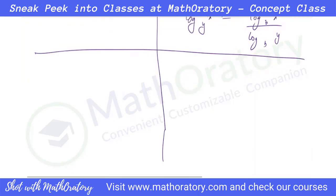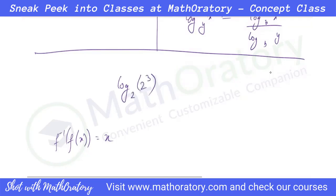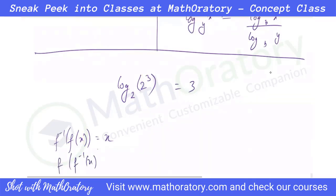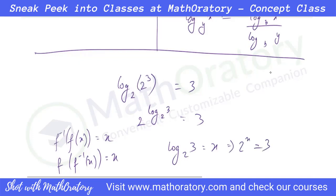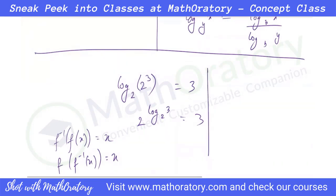The last property uses the inverse idea. Recall that f inverse of f of x always equals x. So two raised to log base two of three will always equal three — we input three into the indices function and take its inverse, giving back three. Similarly, log base two of two to the power x also equals x. So b to the power log_b of x equals x, and log_b of b to the power x equals x. You can also use the power-coming-down property to understand this easily.